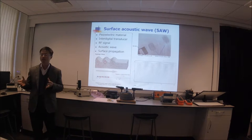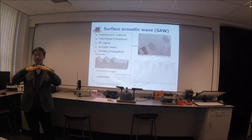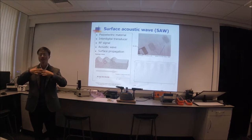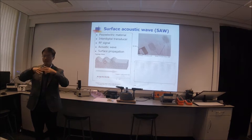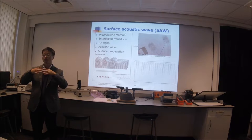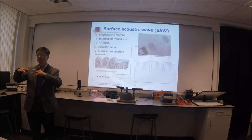Surface acoustic wave technology is based on the piezoelectric effect. If we have piezoelectric material, we can make metallic electrodes on top of it — normally a comb-drive finger-structure electrode. If we apply very high frequency — like megahertz, kilohertz, or gigahertz — the piezoelectric effect converts the high-frequency voltage into mechanical vibration. Then this acts like an earthquake source, generating surface vibration and wave propagation on the surface, similar to how an earthquake generates waves that propagate across Earth's surface.